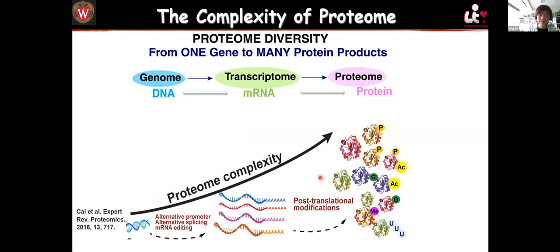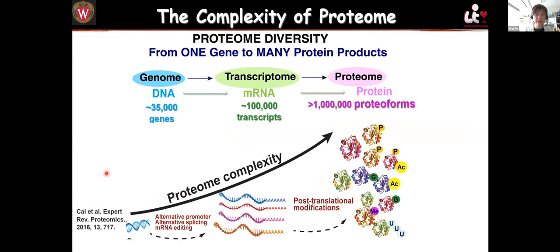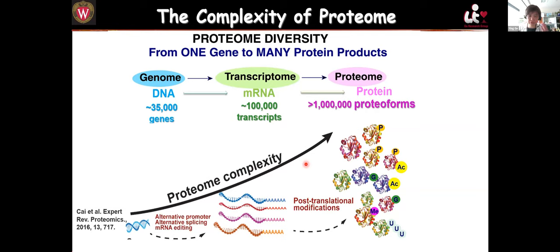The proteome is very complex. Comparing to the genome, there are many more proteins in the proteome because one gene can be alternatively spliced into multiple mRNAs, and there are all kinds of post-translational modifications that occur to proteins, such as phosphorylation, acetylation, methylation, and glycosylation. These modifications are not merely decorations — they really regulate protein activity and function. They are very important but also very difficult to study.